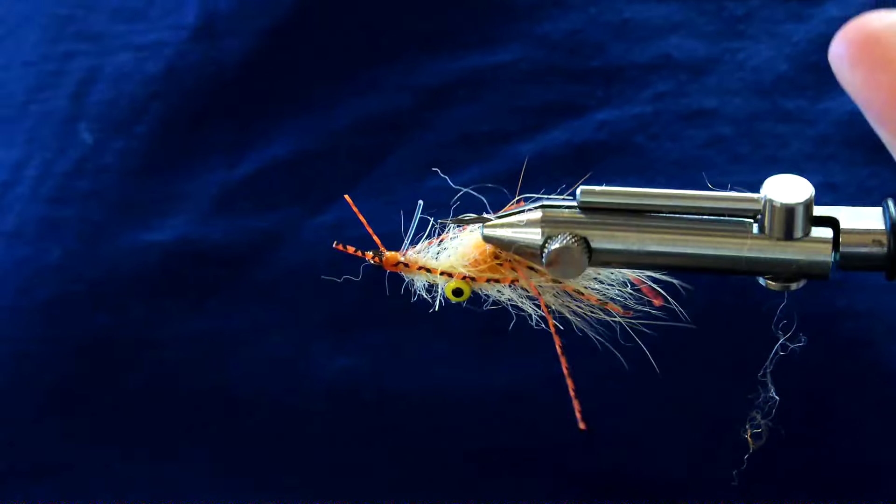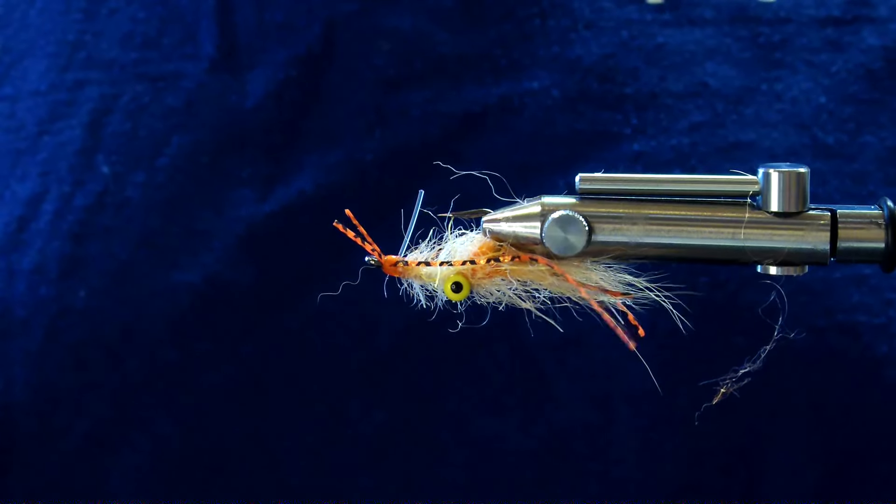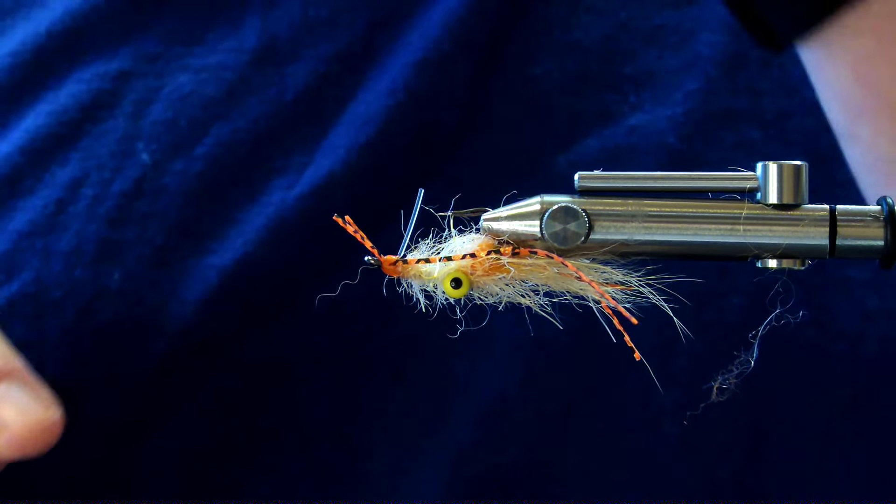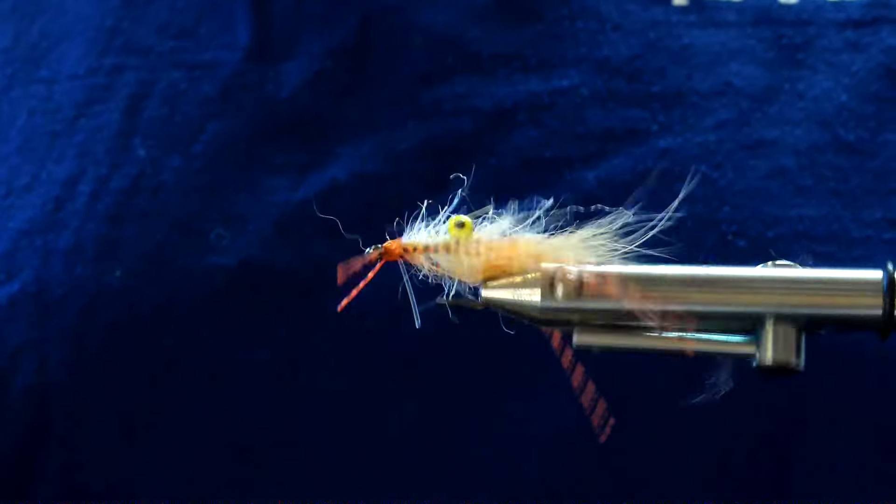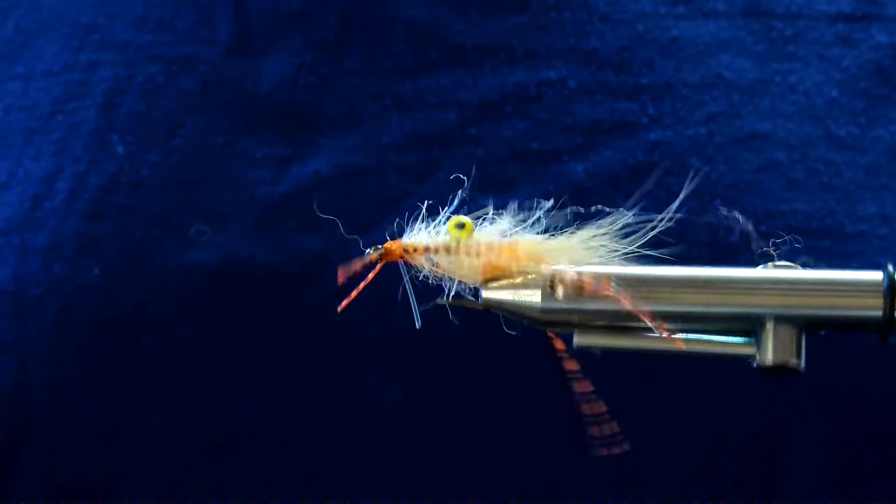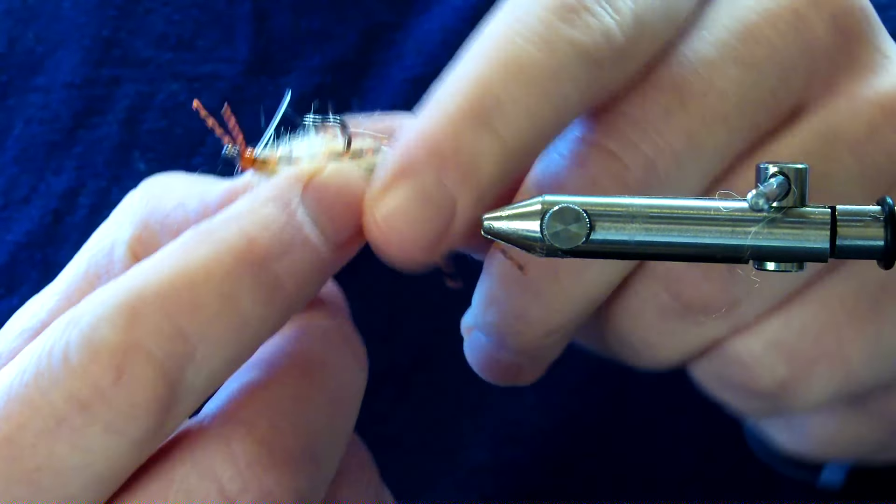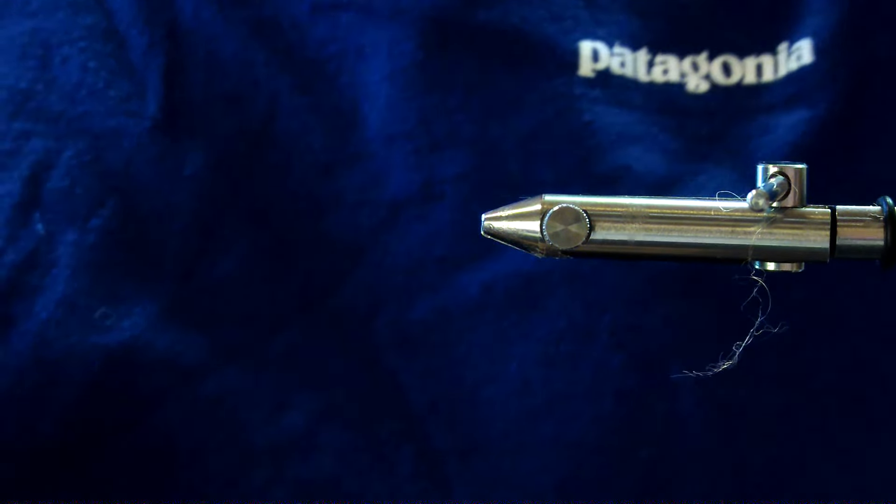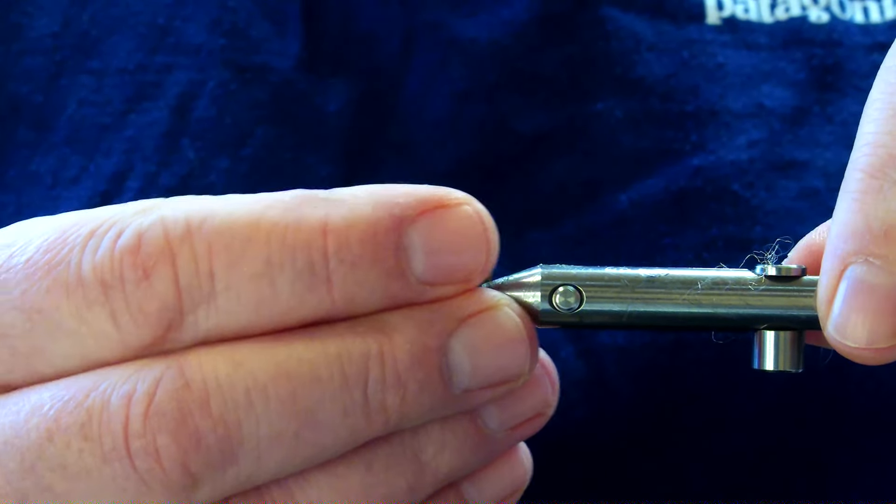So gonna tie a little triggerfish fly here and it's basically a fuzzy looking squimp type thing. It has no name but it's basically a squimp, tied on the Owner Fly Liner size 4, and it's a nifty little pattern. Triggers love it, so I'll go through the materials as I tie them in and there'll be a link in the bio.